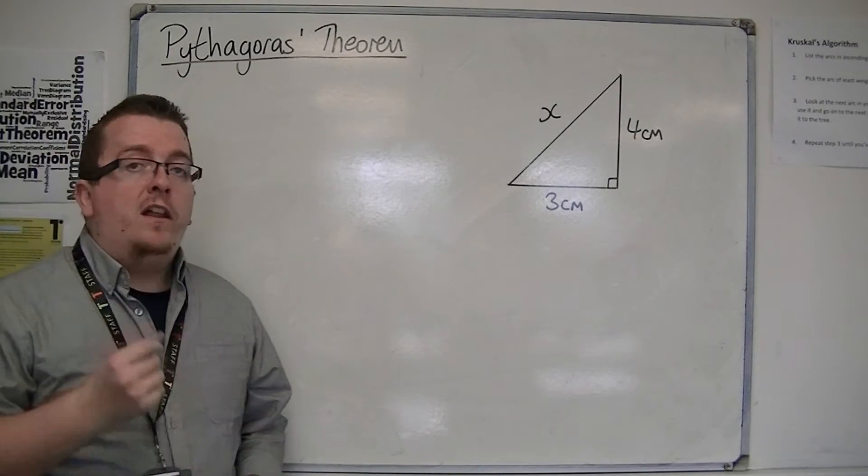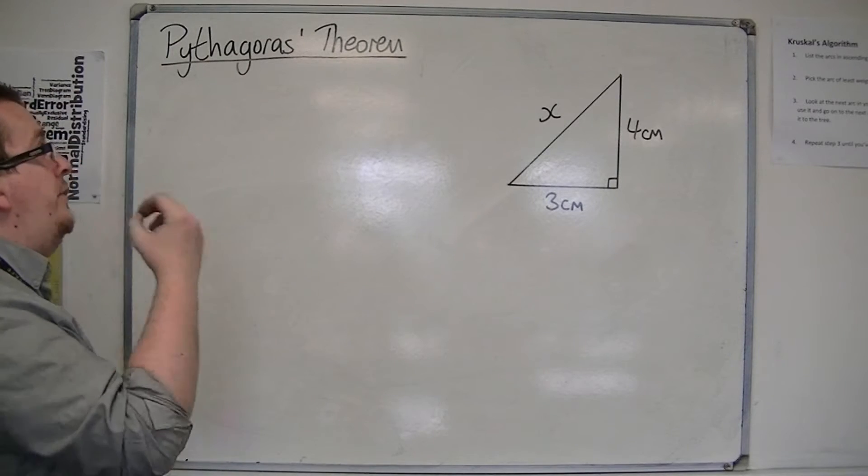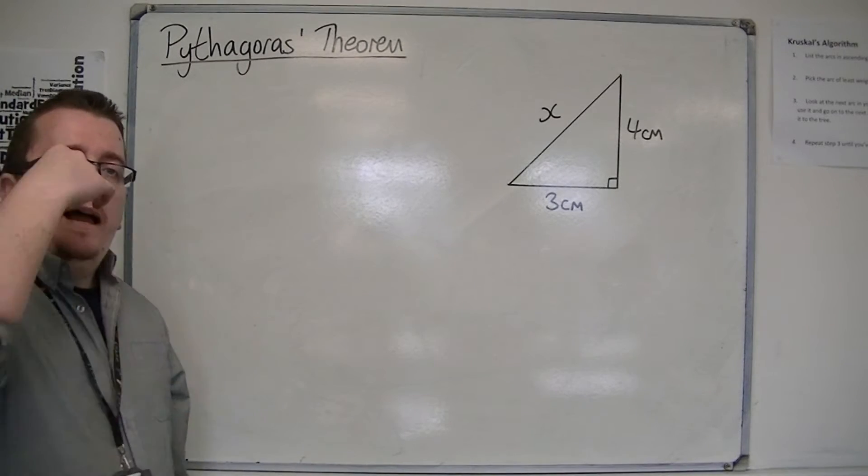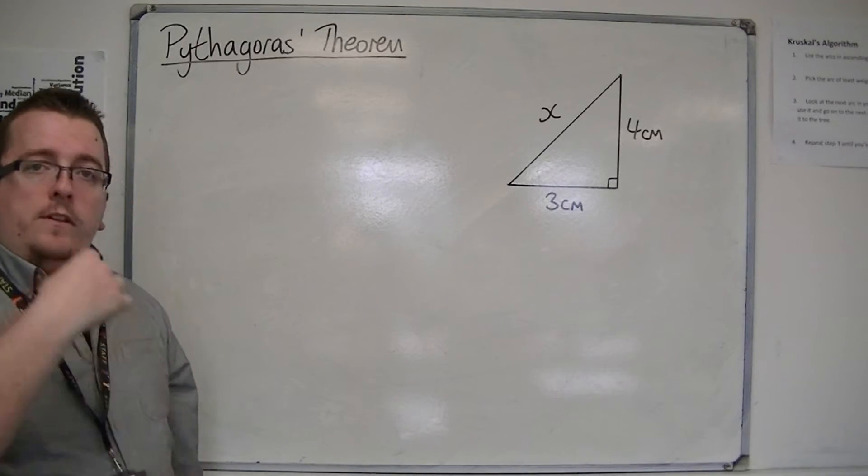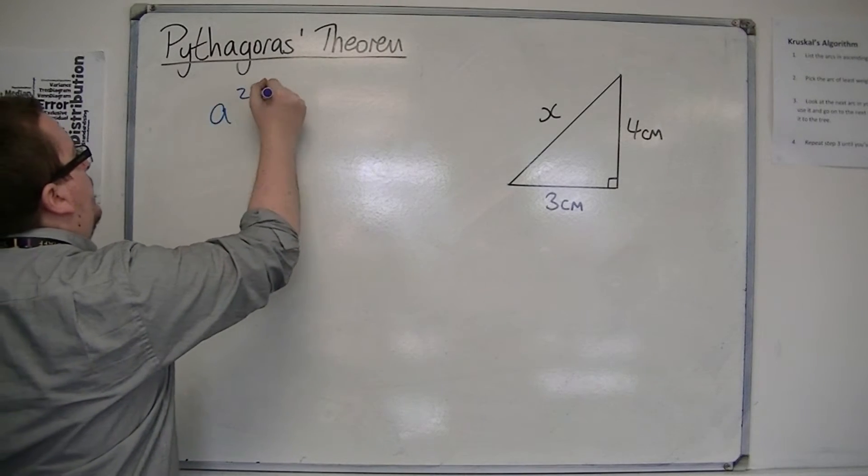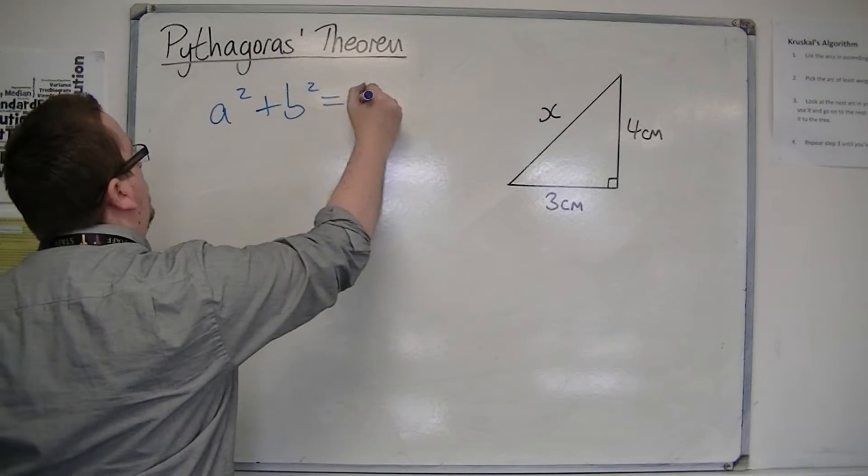That should set alarm bells ringing and think, right, this is Pythagoras' theorem, and we need to write down that theorem. A squared plus B squared equals C squared.